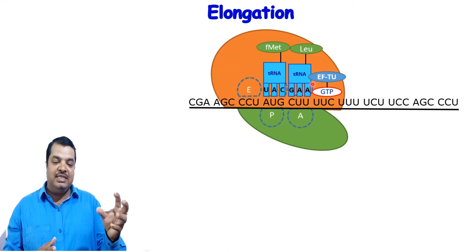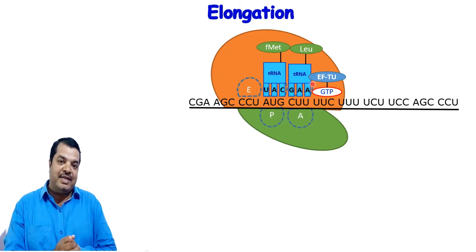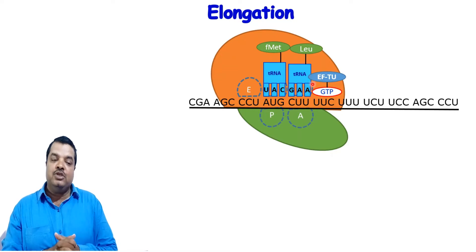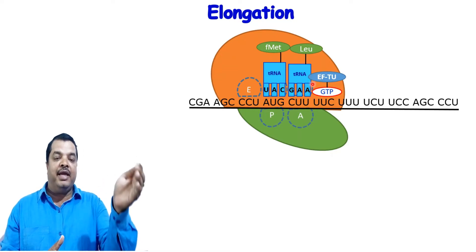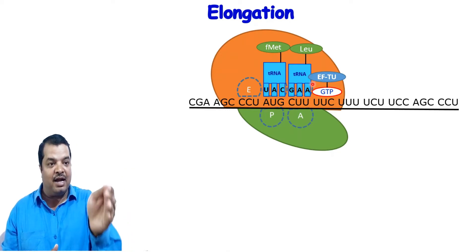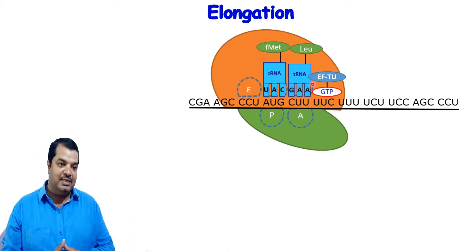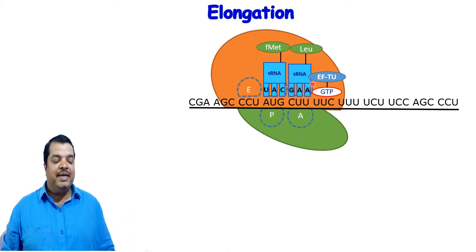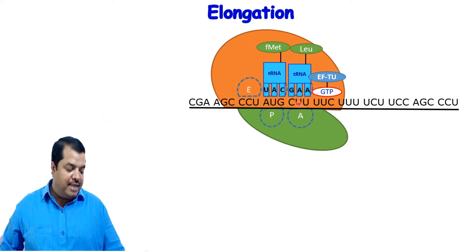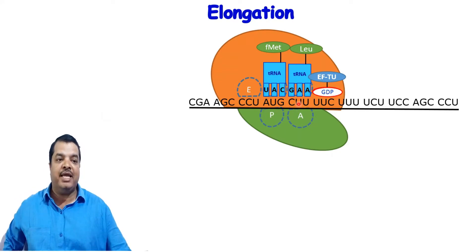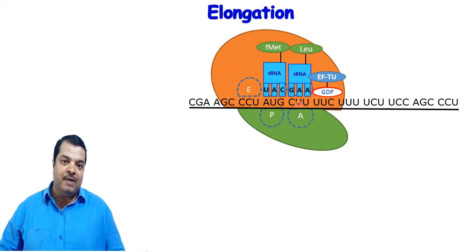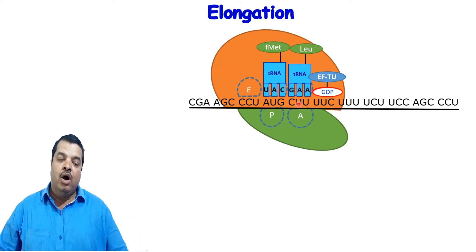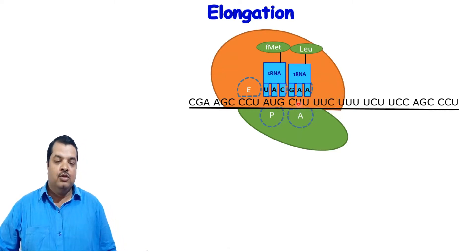These are the GTP-bound elongation factors. GTP provides energy for this elongation step, which allows binding to the A site. The next step is GTP hydrolysis. GTP will be hydrolyzed to provide energy, and the elongation factor will then be released.